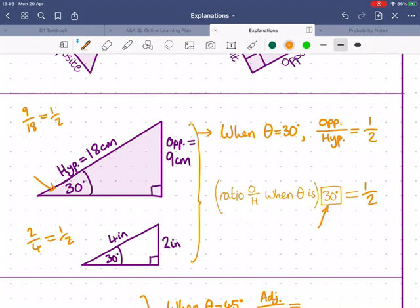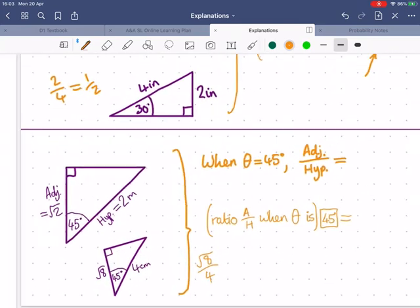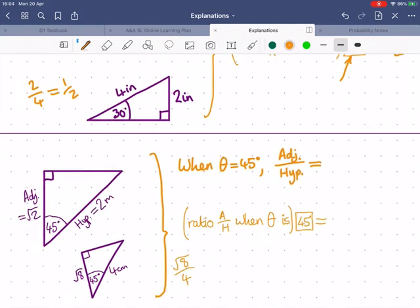So you can make the triangle bigger, but in proportion to one another, opposite over hypotenuse will still have the same relationship, the same ratio. Well, that's the relationship between two of the sides. What about another two sides?